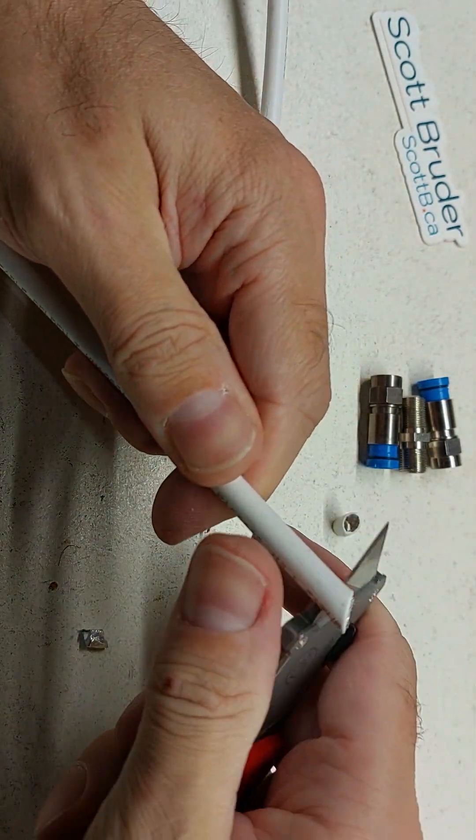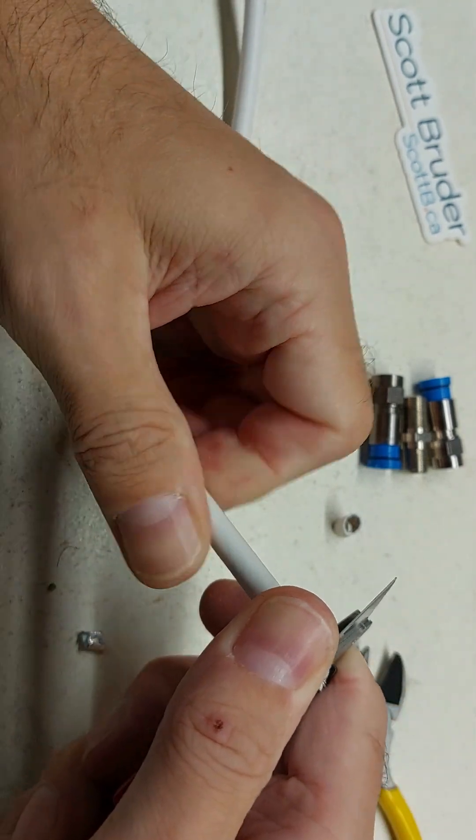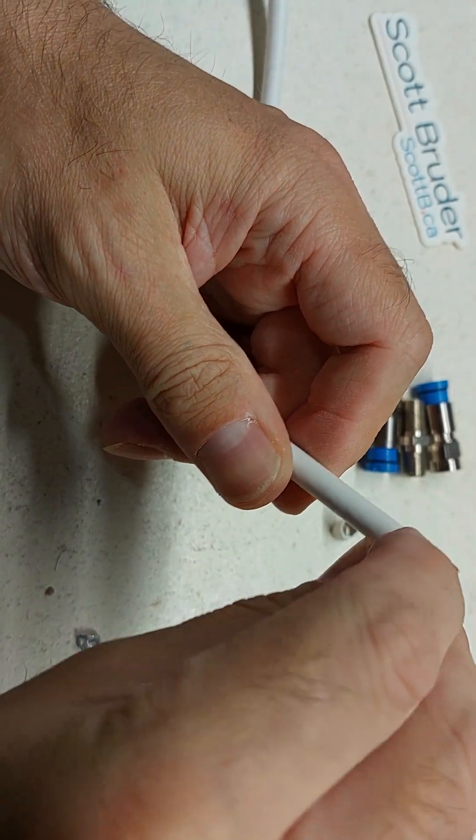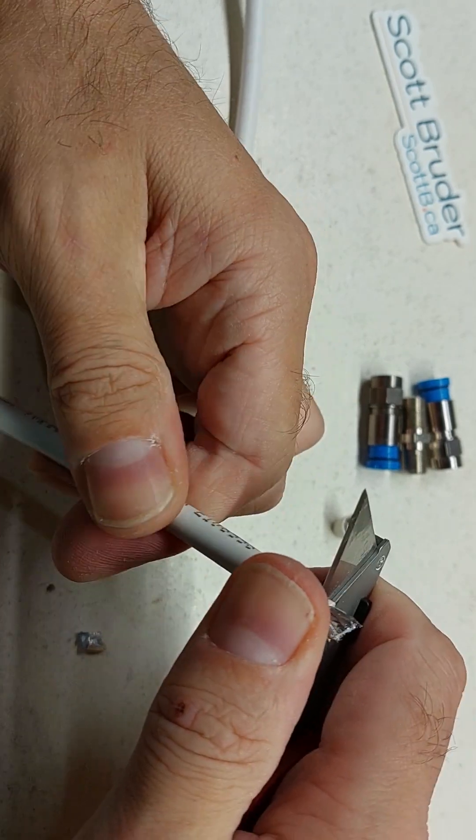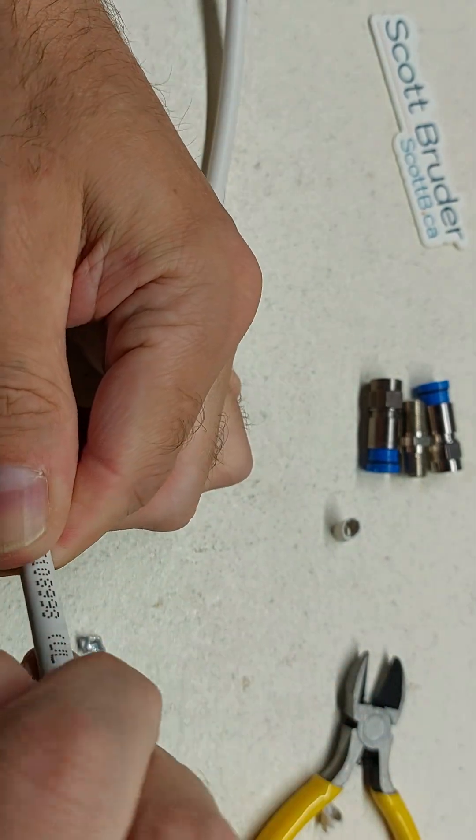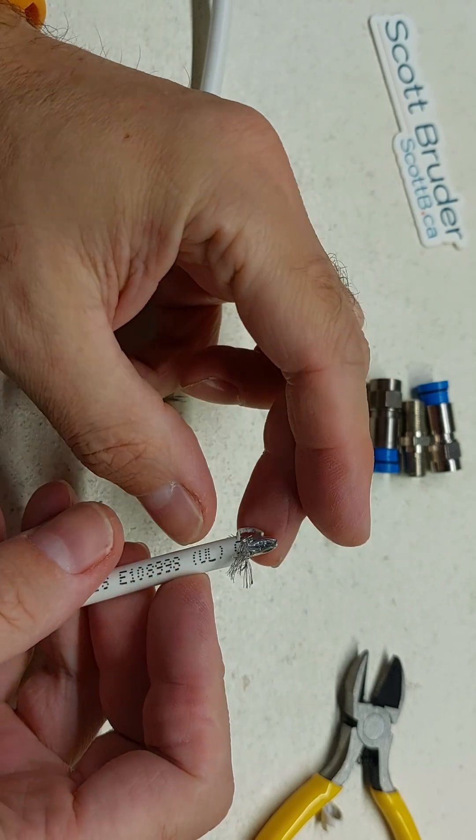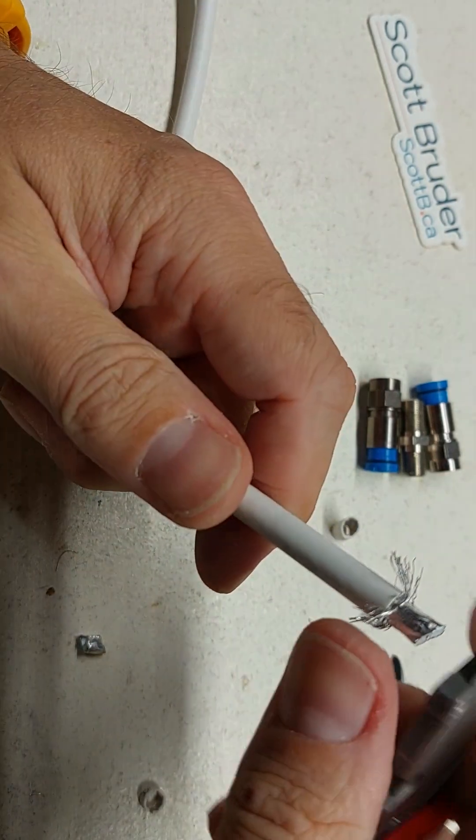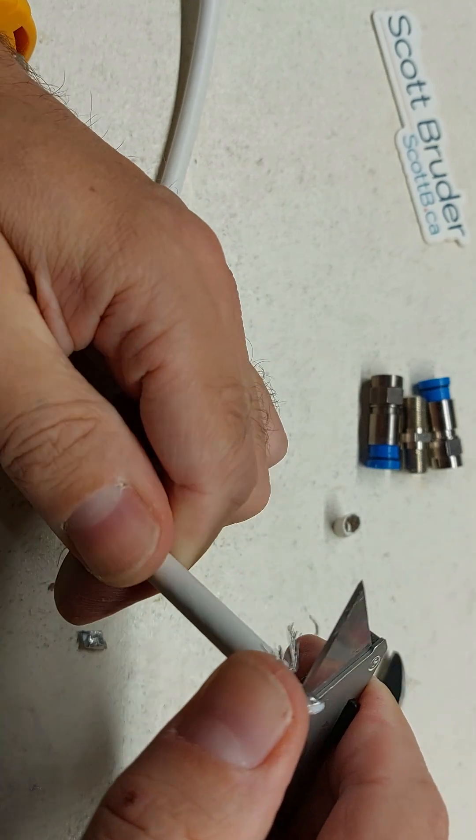Same thing on the other side. I'm gonna just strip it lightly, just enough to get that outside sheathing off. Let's peel back the grounding braid, get rid of any extra plastic we need, and then I'm going to take off that dielectric foam.